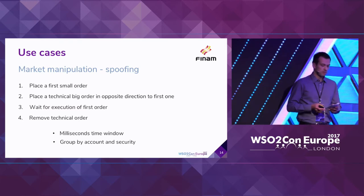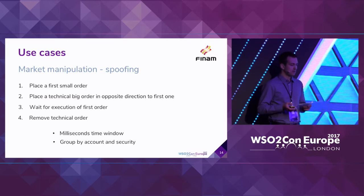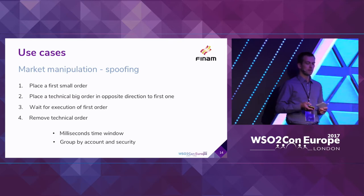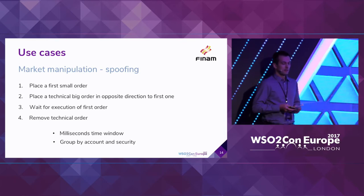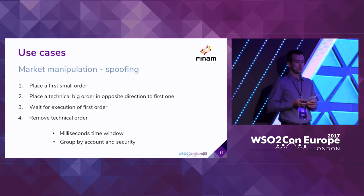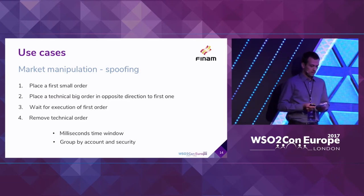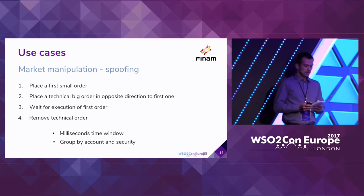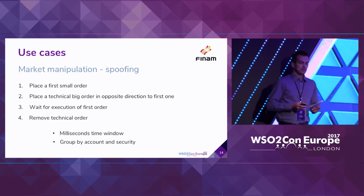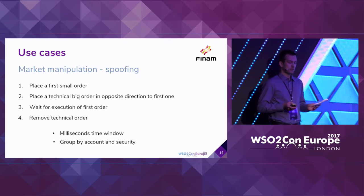Let me describe several use cases where CEP is used now or will be used in the nearest future. The first example is a market manipulation type — specifically spoofing. In this case, a client places a first small order, then places a technically big order in the opposite direction. He waits for execution of the first order and immediately closes the technical order after execution. We have three actions from one client or one group of clients within one security, and the time between these actions can be several or tens of milliseconds. We successfully find this type of market manipulation.